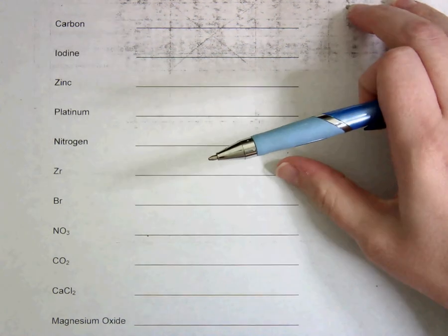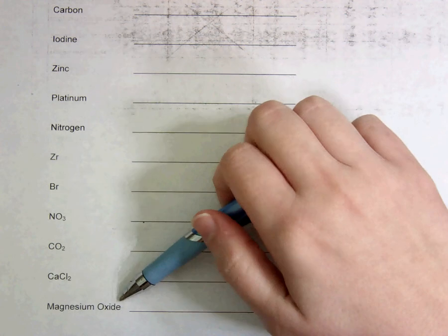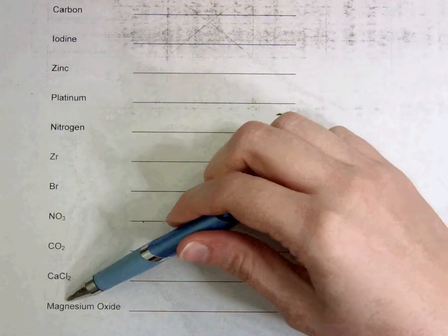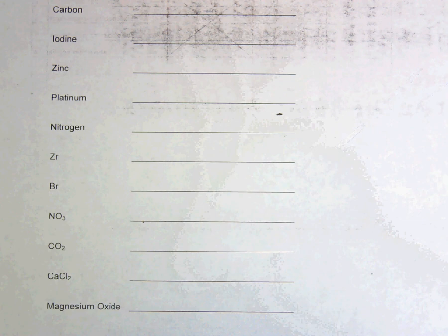When you get down to the last one, magnesium oxide, you're going to have to remember your rules for making a compound from its name. Make the compound and then figure out its mass. If you do still have any questions, please come ask.